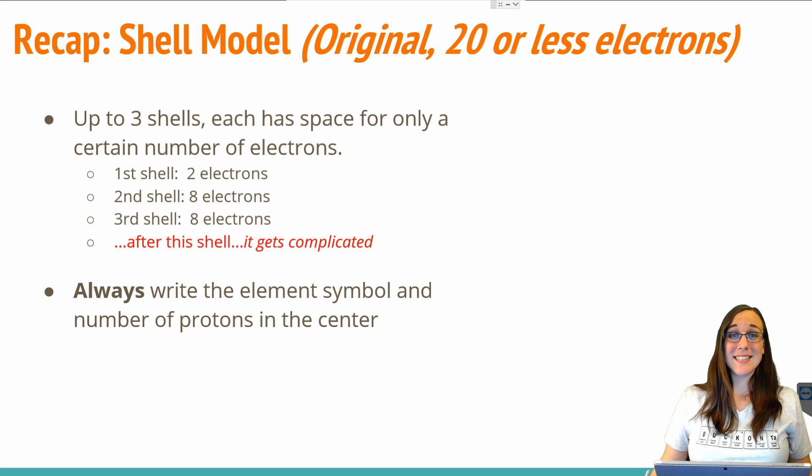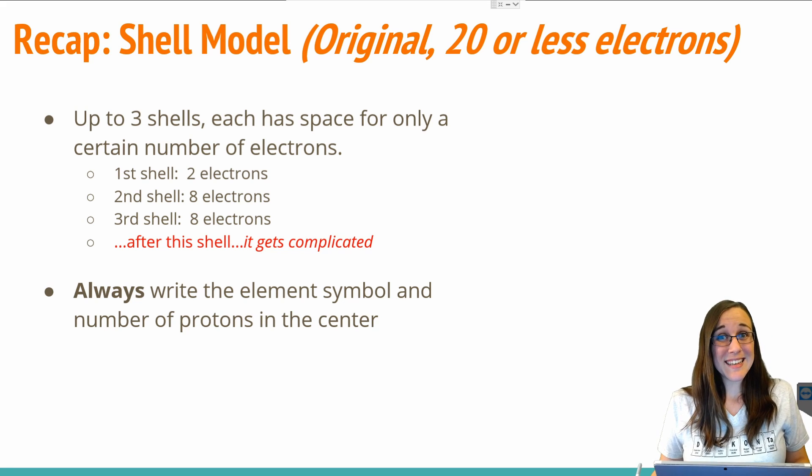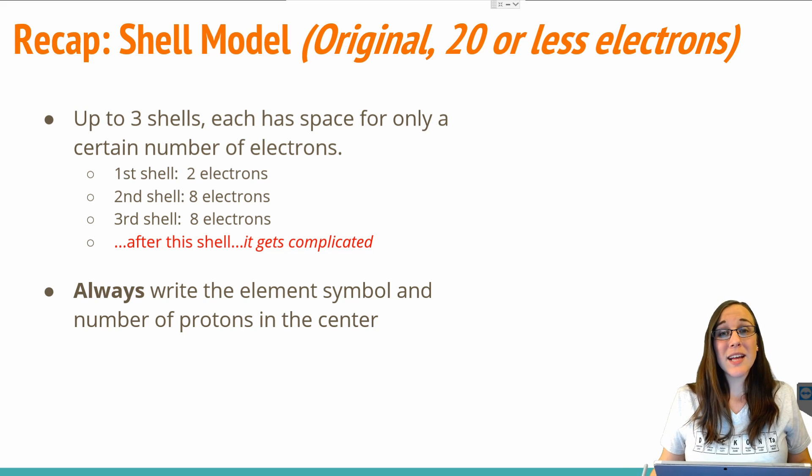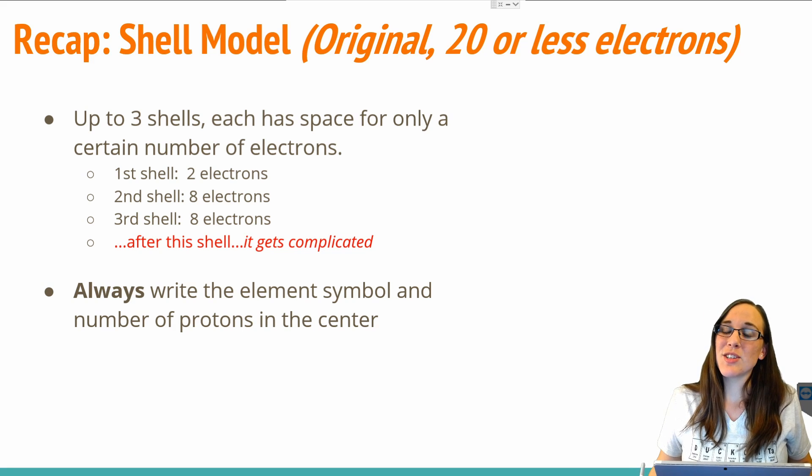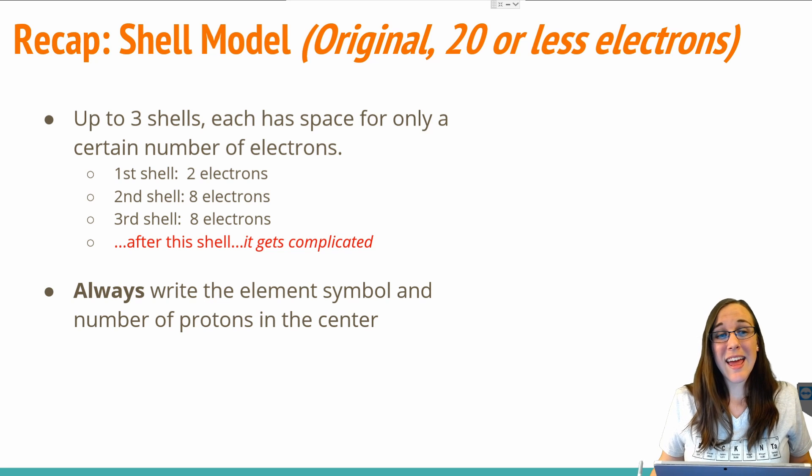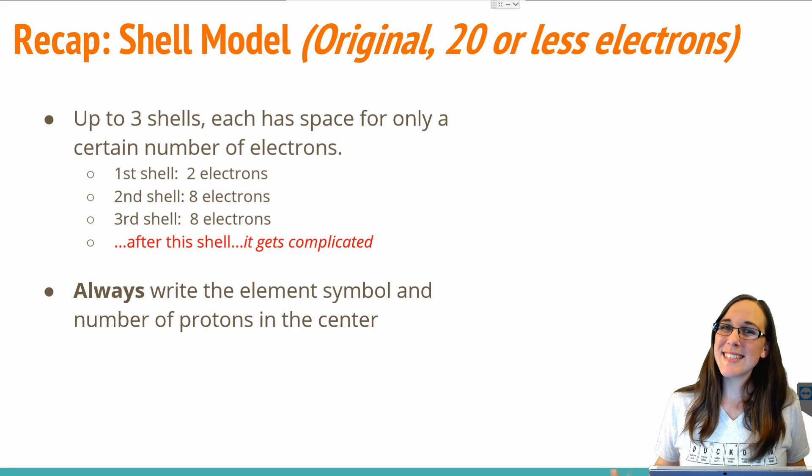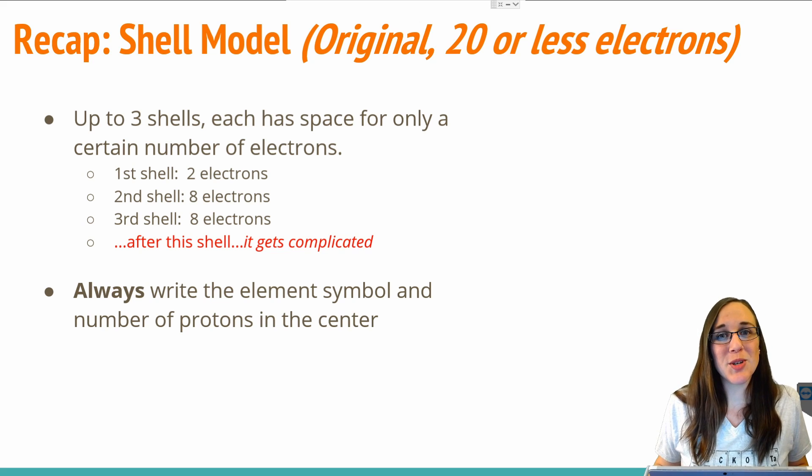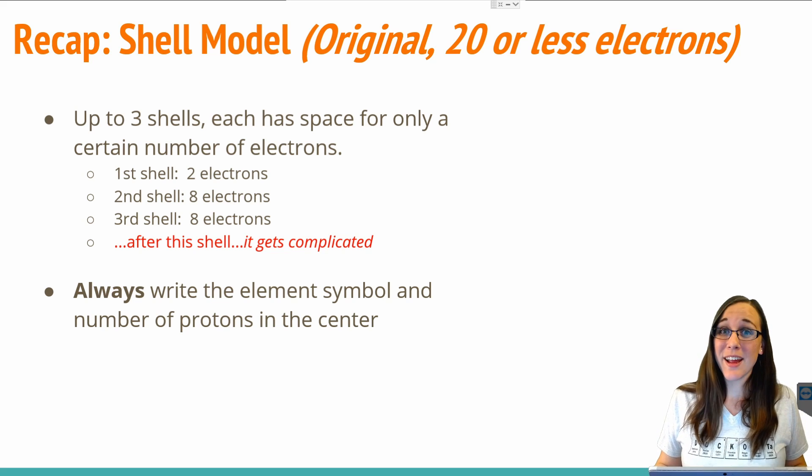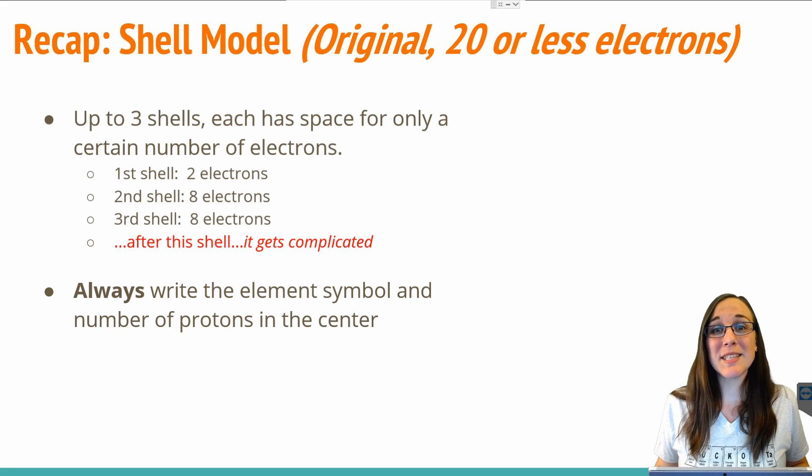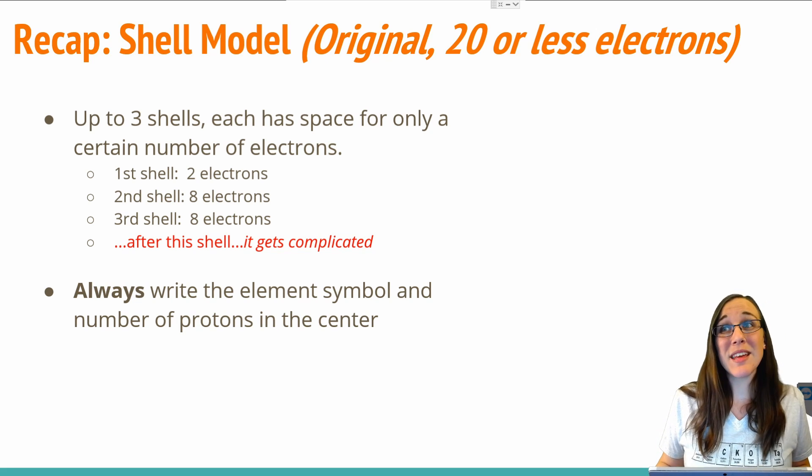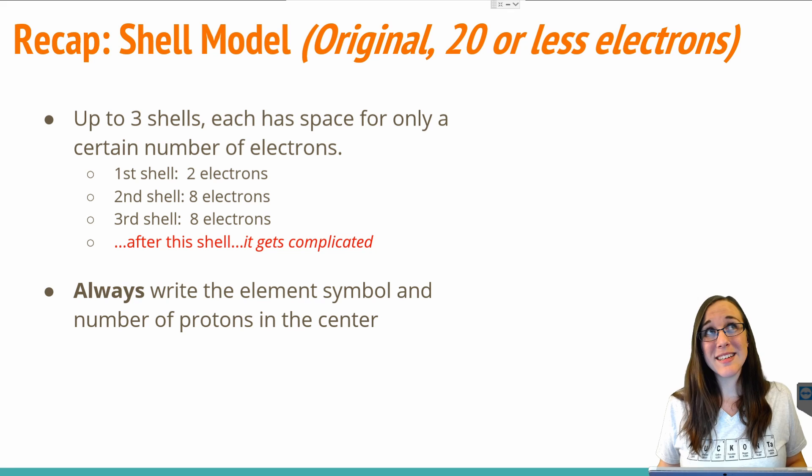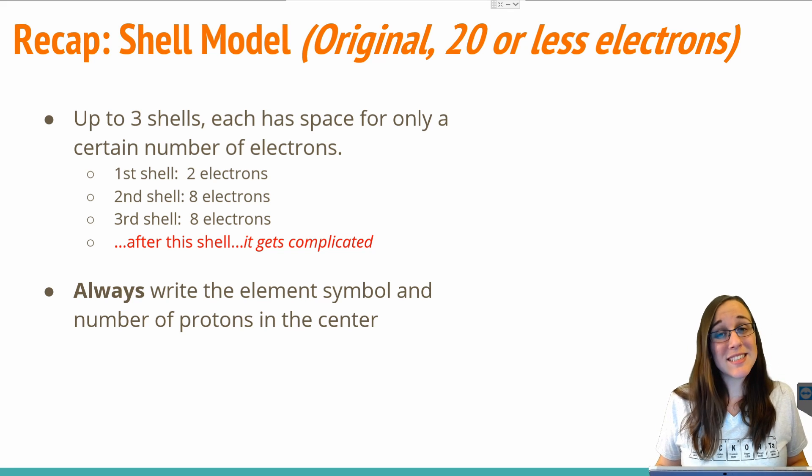By the end of this video, you should be able to explain why we can make shell models with 20 or more electrons by using orbital diagrams to do so, and you should be able to make a shell model that has more than 20 electrons.